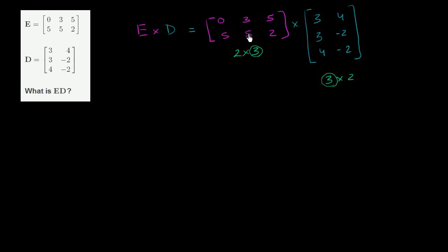If these two numbers weren't equal, if the number of columns here were not equal to the number of rows here, then this would not be a valid operation, at least the way that we have defined matrix multiplication. The other thing you always have to remember is that E times D is not always the same thing as D times E. Order matters when you're multiplying matrices. It doesn't matter if you're multiplying regular numbers, but it matters for matrices.